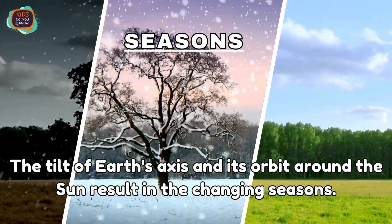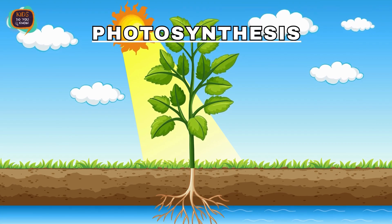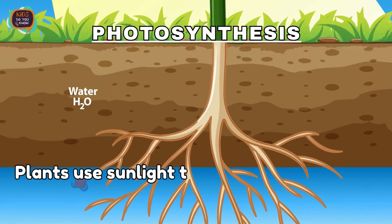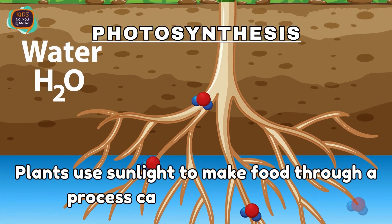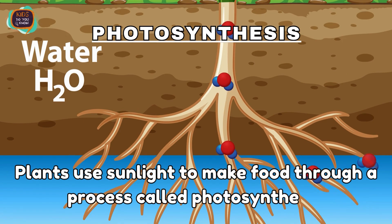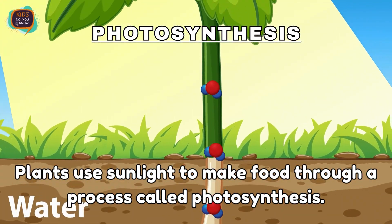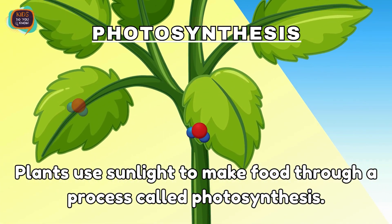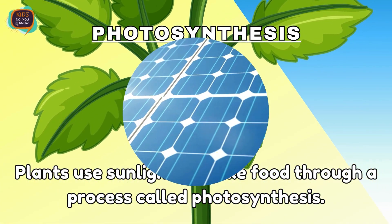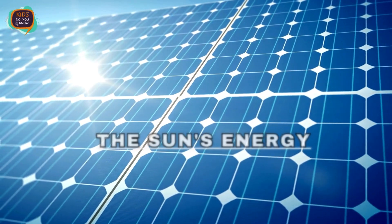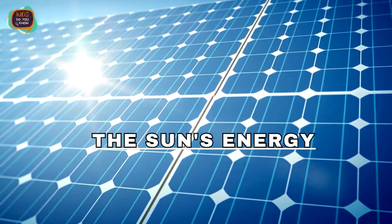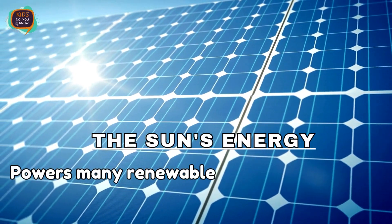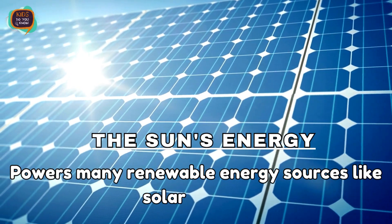The tilt of Earth's axis and its orbit around the Sun result in the changing seasons. Plants use sunlight to make food through a process called photosynthesis. The Sun's energy also powers renewable energy sources like solar panels.